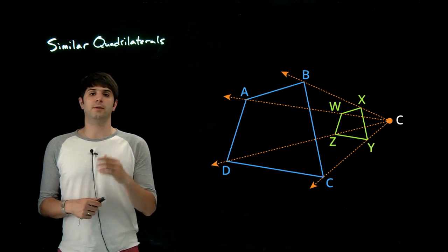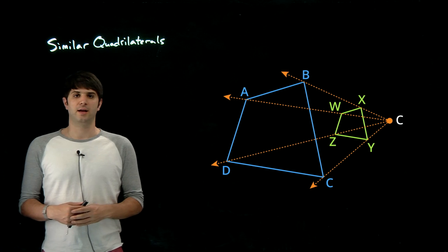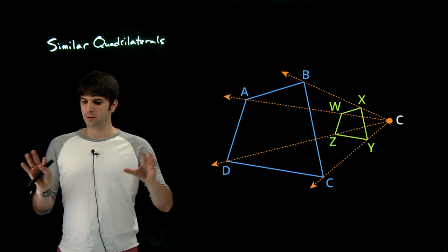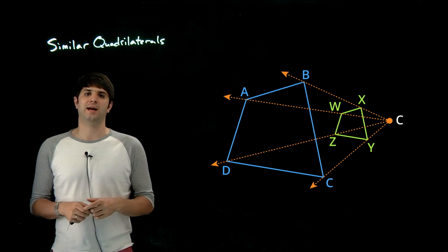So whenever we're talking about similarity, we have to go back to our definition of what that means. Remember, similar means we have congruent angles. So if we have two shapes with congruent angles and proportional side lengths, then the two shapes are similar.